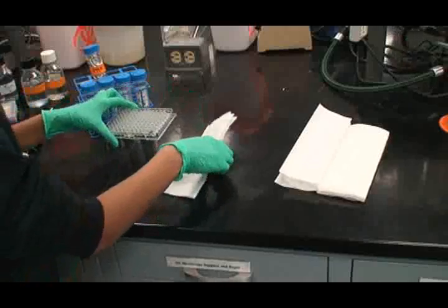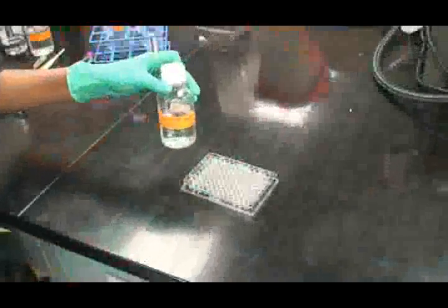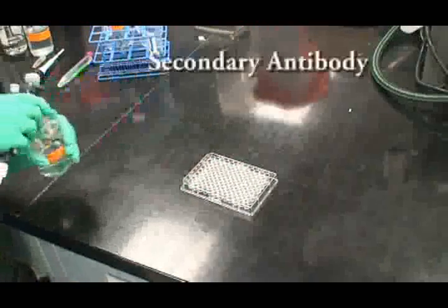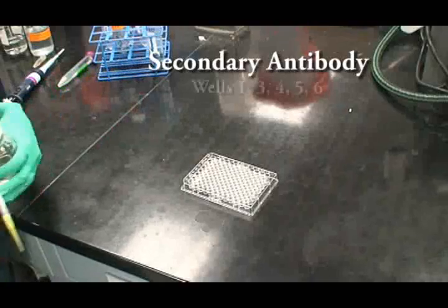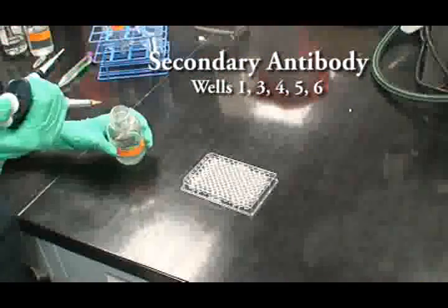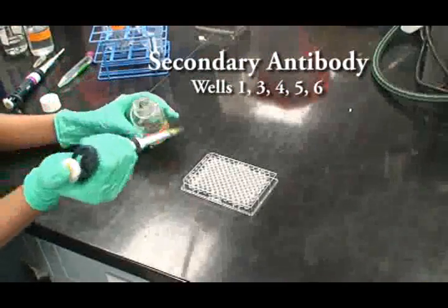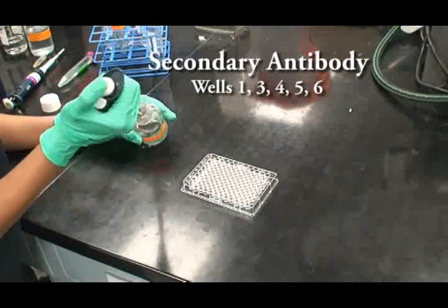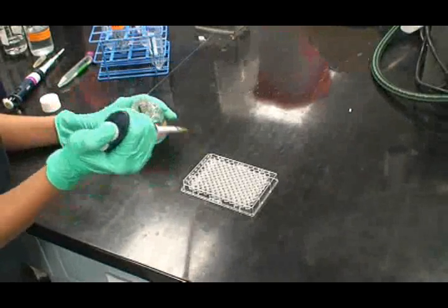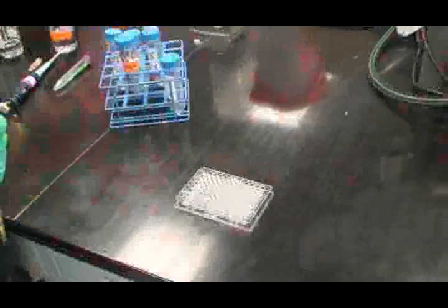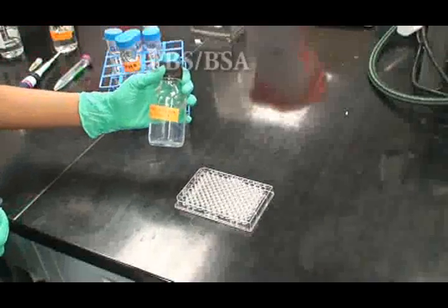Add 100 microliters of secondary antibody, diluted goat anti-rabbit IgG conjugated with HRP, to wells 1, 2, 3, 4, 5, 6, 7, and 8. Add PBS-BSA to wells 2, 7, and 8.